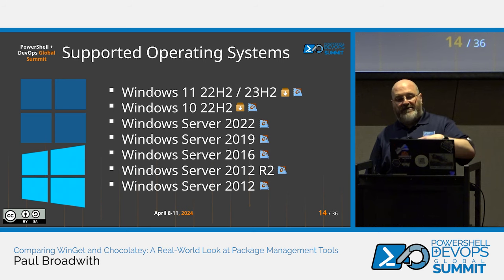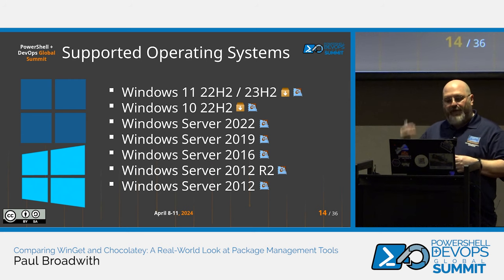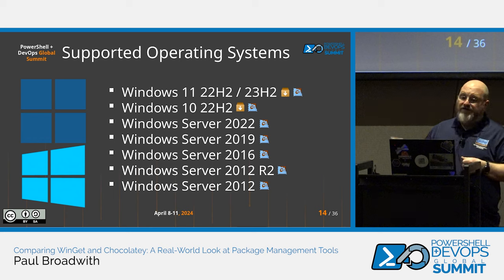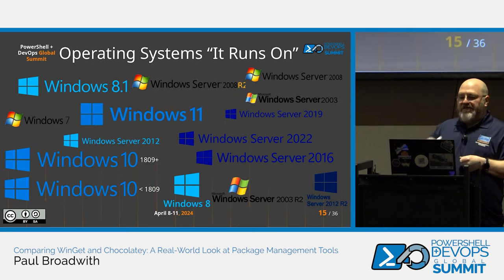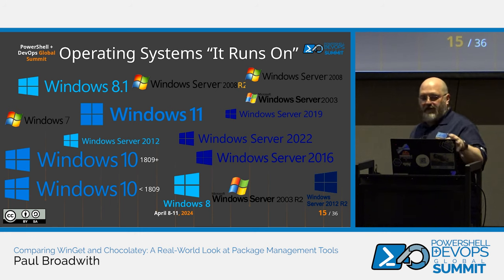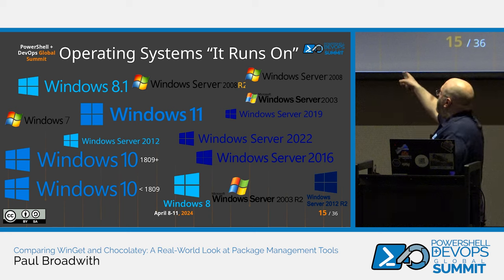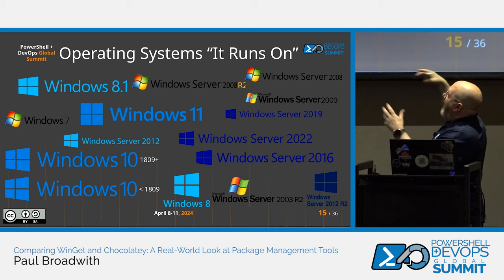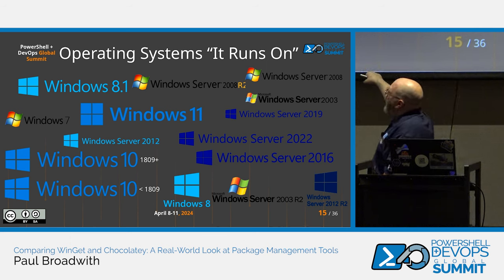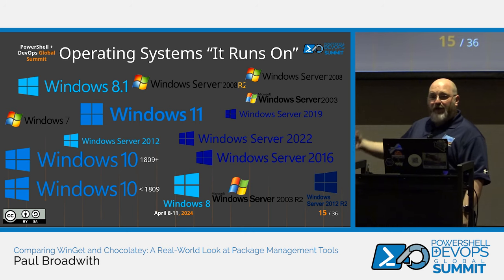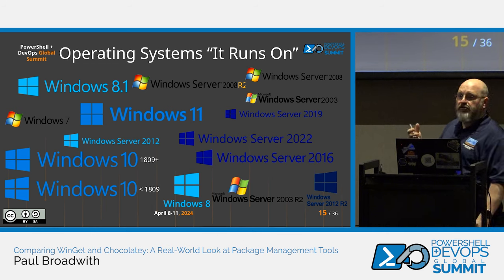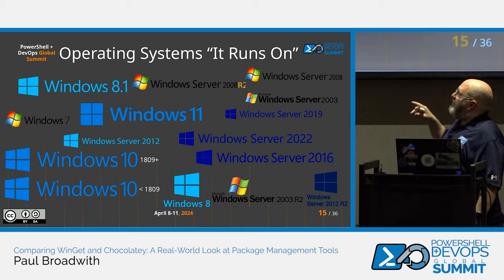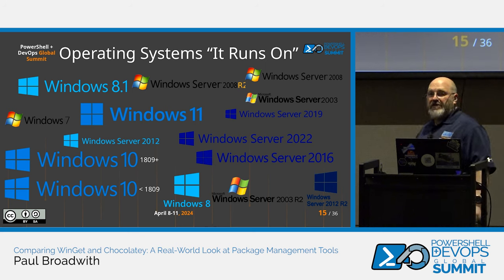Chocolatey CLI, on the other hand, runs on all of those operating systems and is supported on all of them. If you come to Chocolatey with a problem running Chocolatey CLI on Windows Server 2012, that's supported. We supported Windows Server 2008 R2 and Azure until January, but that's now end-of-life, so we try to keep up with what Microsoft supports. Chocolatey will also run on very old systems like Windows Server 2003 R2 and Windows 7 — unsupported, but it will run, with caveats around TLS 1.2 and .NET 4.5 or 4.8.